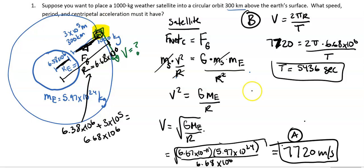Let's go ahead and look at the last one, centripetal acceleration. So that is V squared over R. V is 7,720 squared, R is our 6.68 times 10 to the 6th, and I get 8.9 meters per second squared.